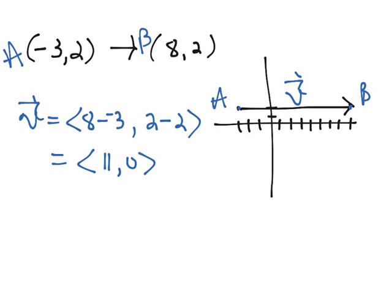Now geometrically, if you look at this picture, it should make sense that v is the vector 11, 0. Because if you start at A and go 11 spaces to the right and don't go up any, you end up at point B.